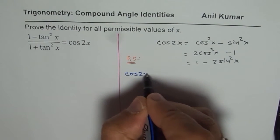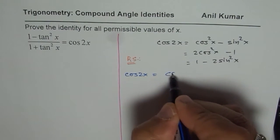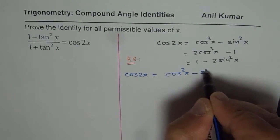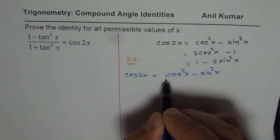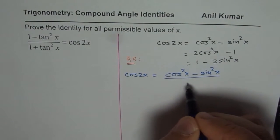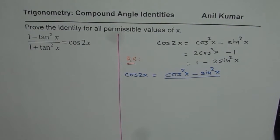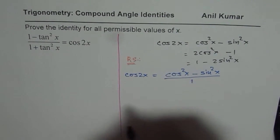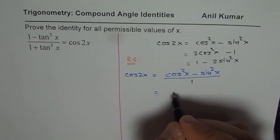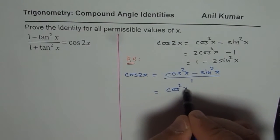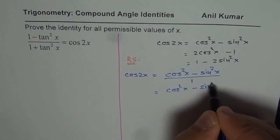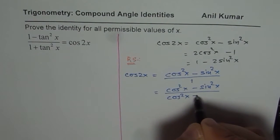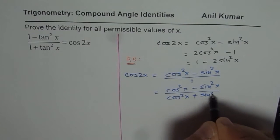So we say cos 2x equals cos square x minus sin square x. And remember this is equal to this one, divided by 1. But what is 1? We can write 1 as cos square x plus sin square x. Is that okay?